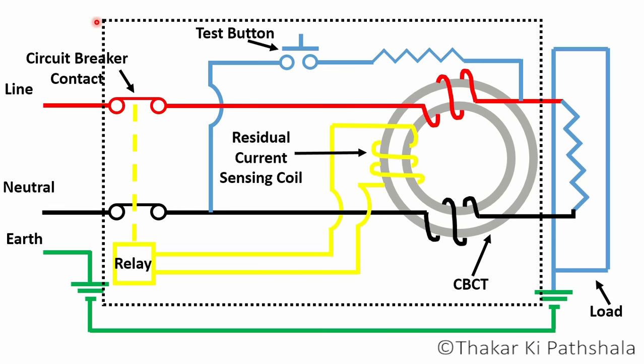You can see the basic circuit diagram of ELCB. This dotted region is the ELCB portion. It consists of a circuit breaker, relay, and a core balance current transformer which is also called a CBCT. And this is the test button by pressing which you can test whether the ELCB is working or not. Apart from that, this is our line conductor, this is neutral, and this is the earth conductor. This is the load which represents our household equipment.